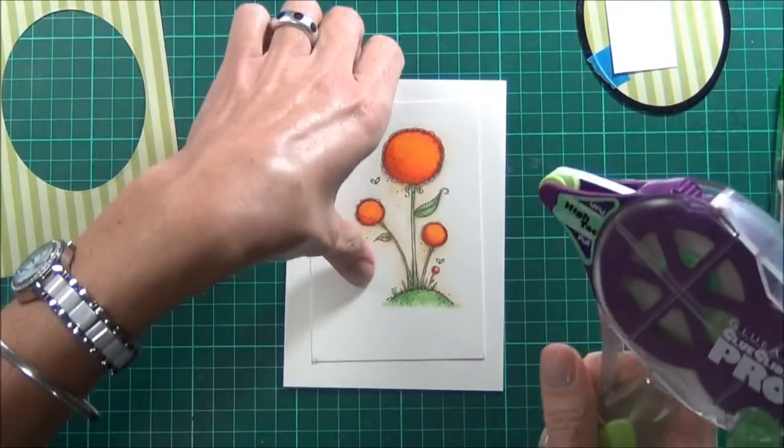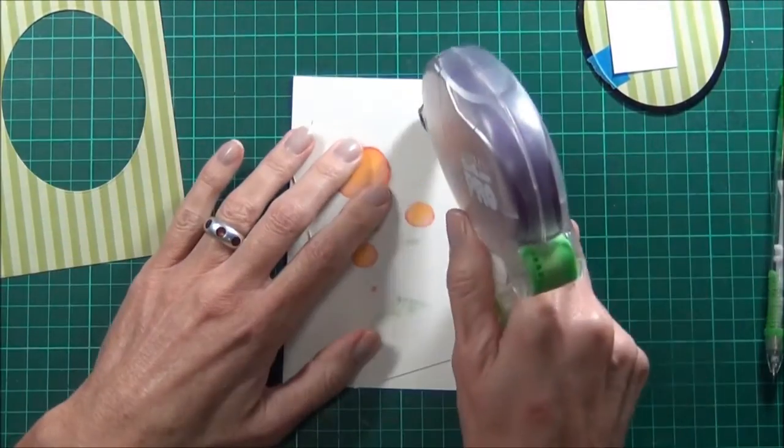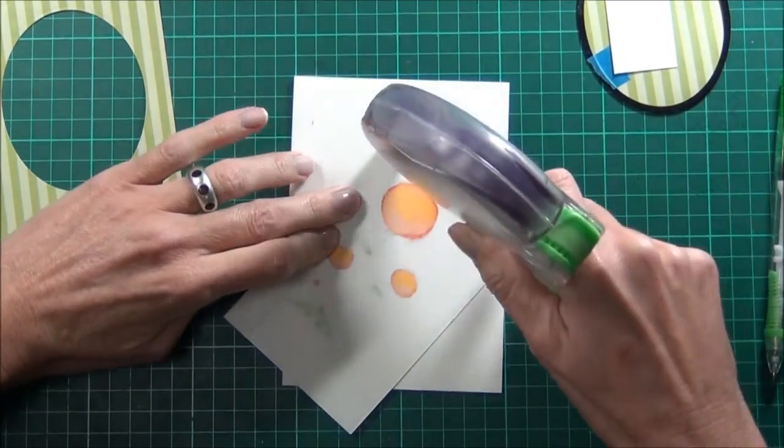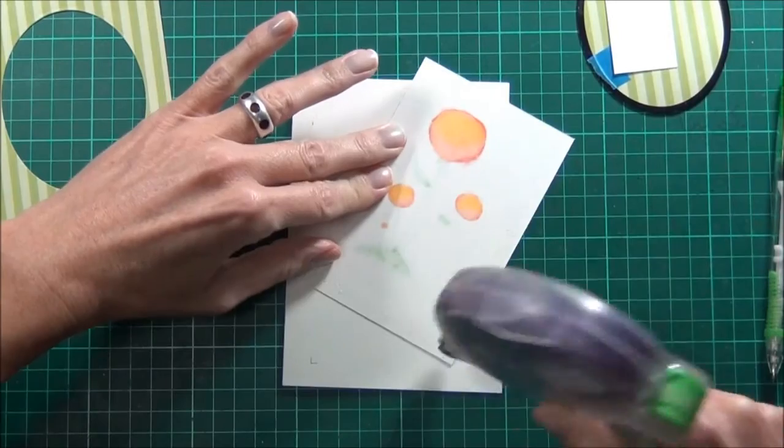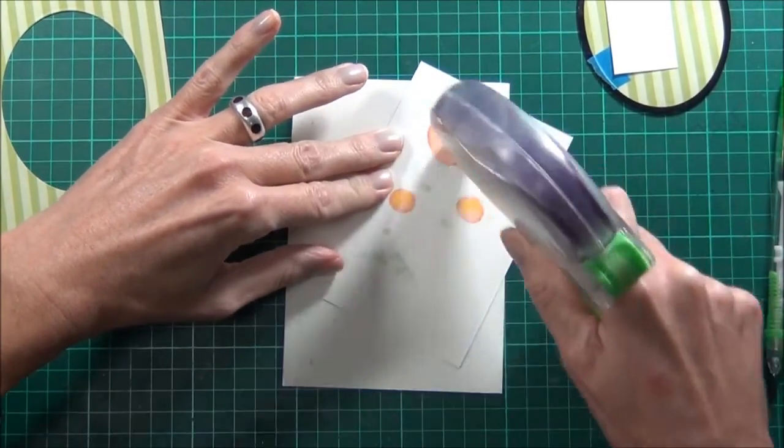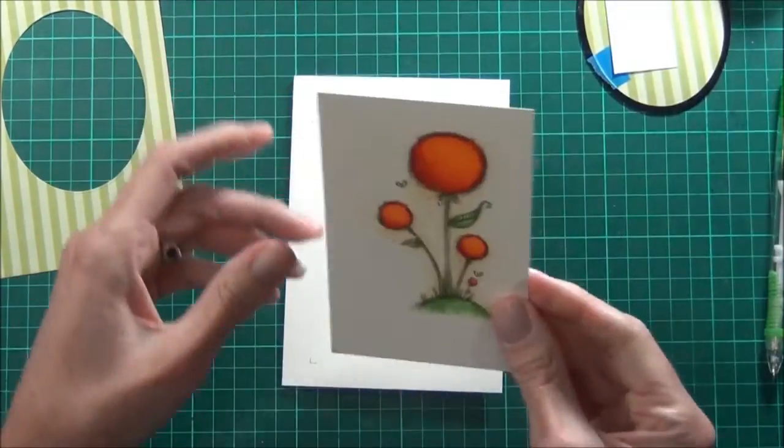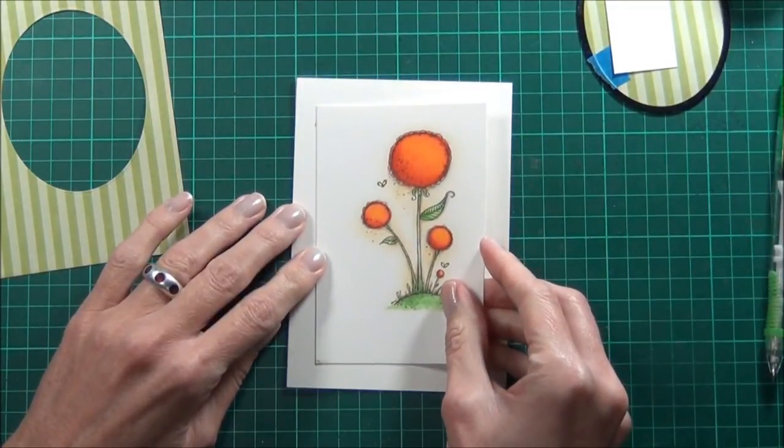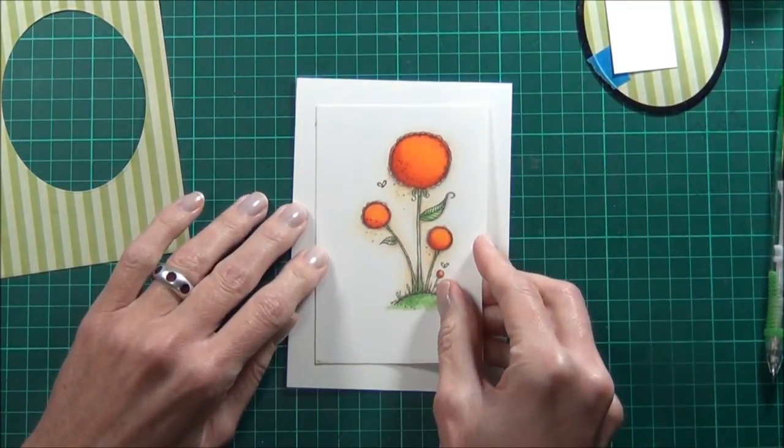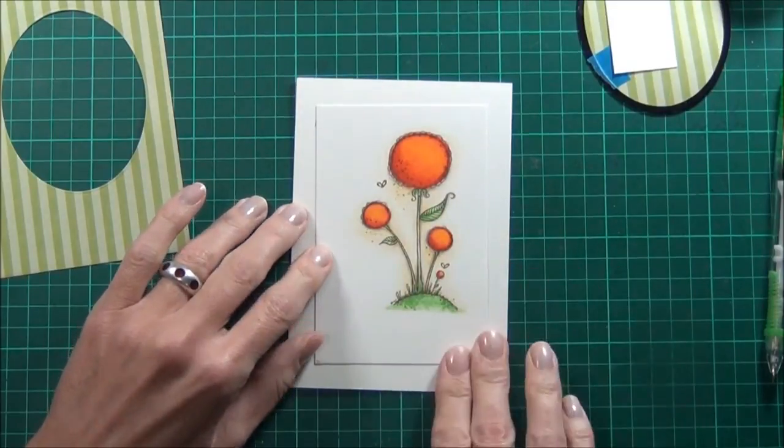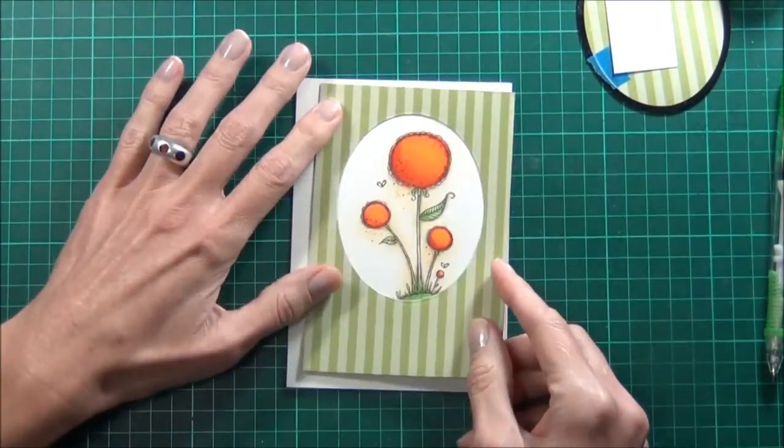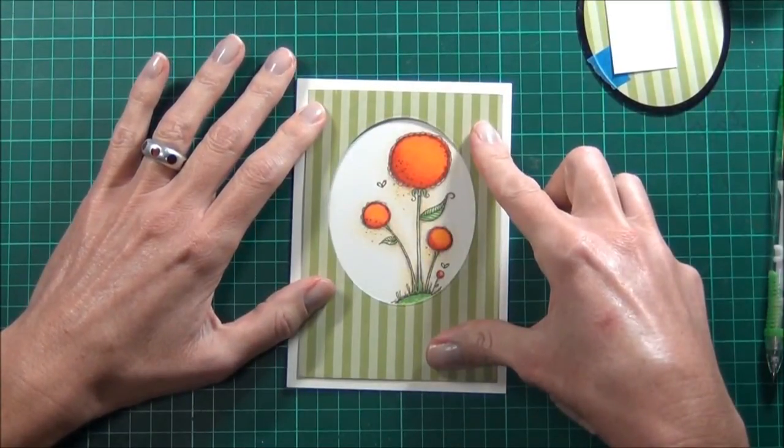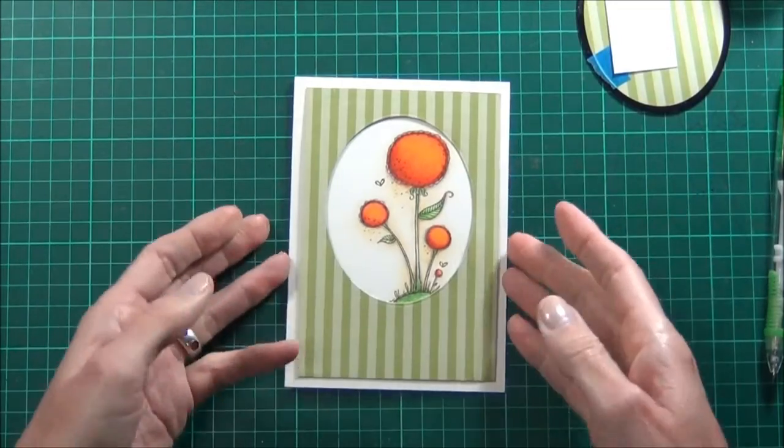Okay, so I have some double-sided tape that I'll just apply to my image here and adhere that down. I'll work out my sentiment. I'll just tie a bow.